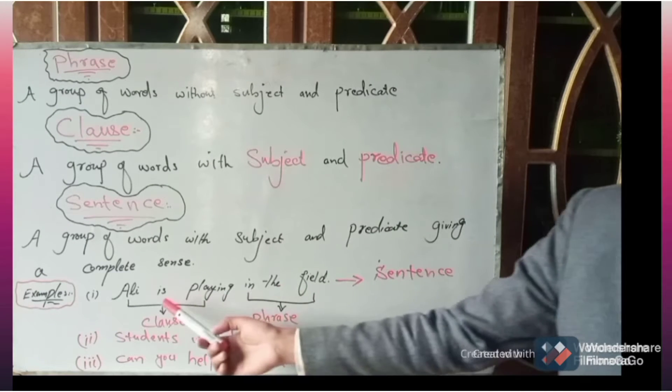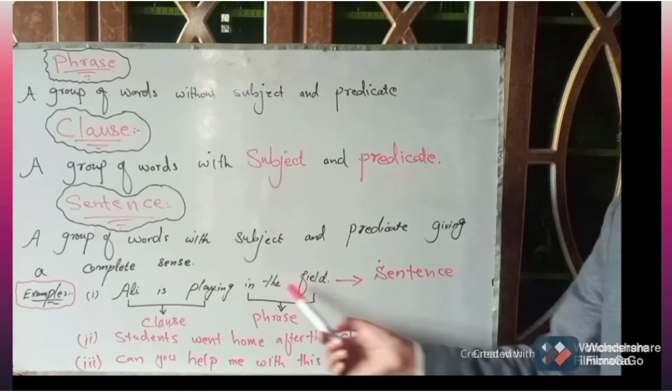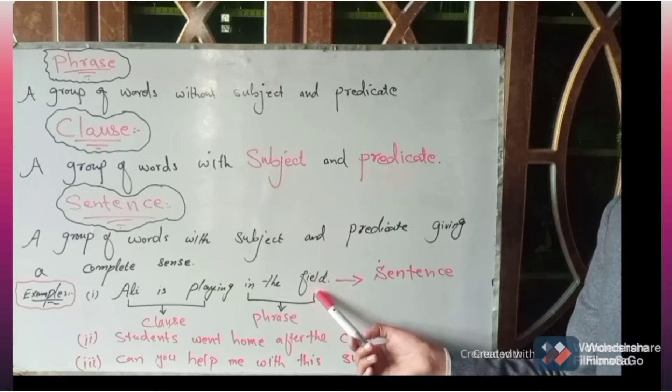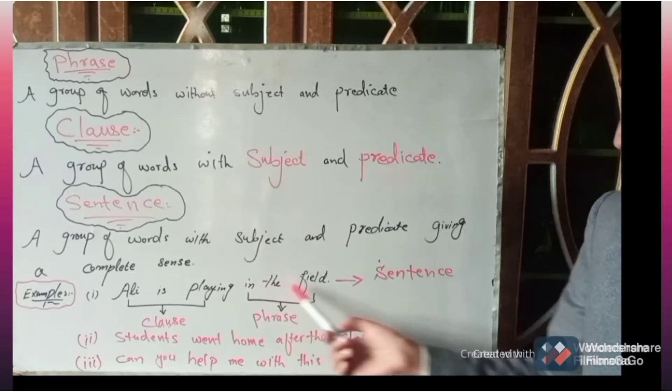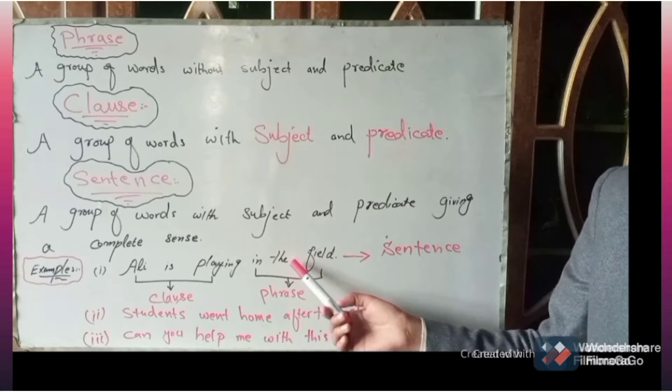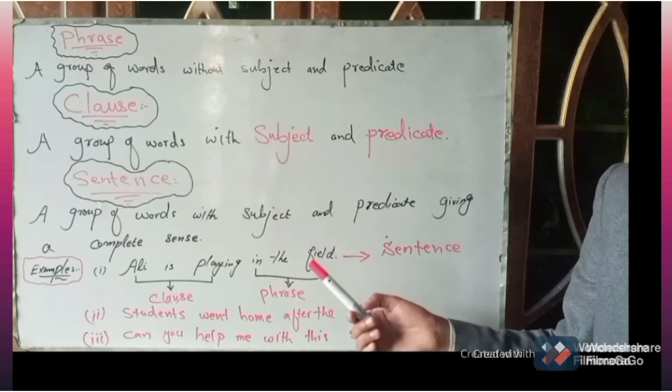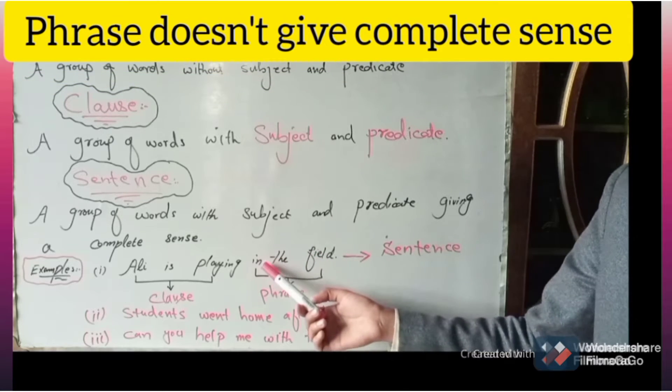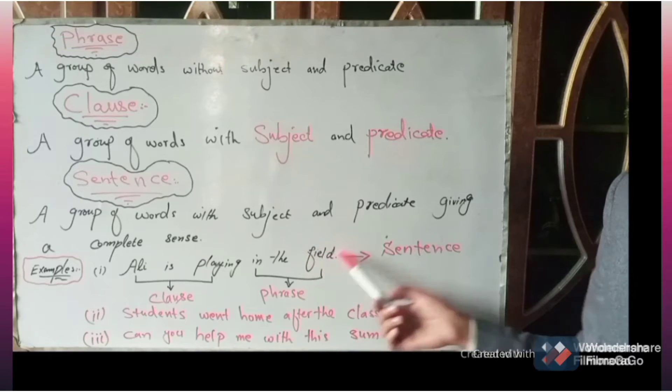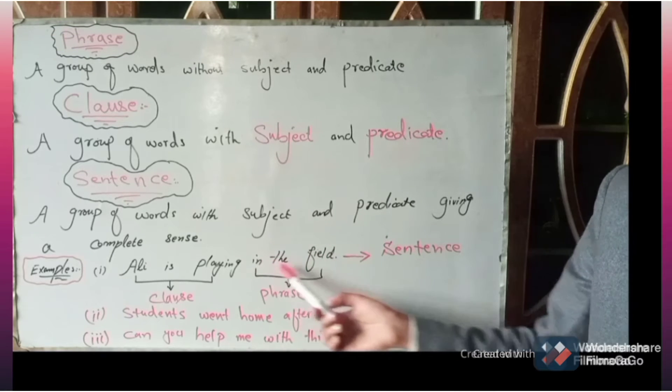Okay, for example, you can see, Ali is playing in the field. In the field, there are three words. But these words don't convey any meaning. They don't give any sense. So there is no subject and there is no predicate. Therefore, this is phrase.